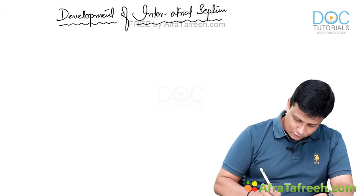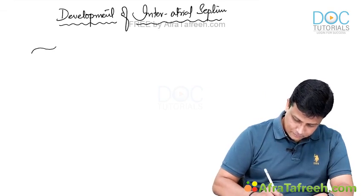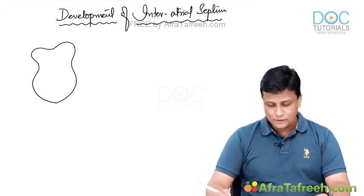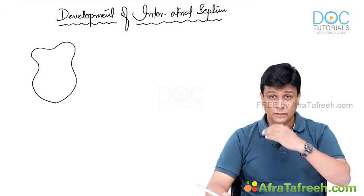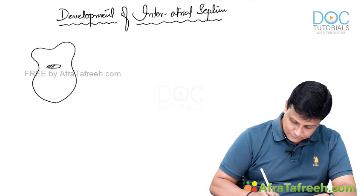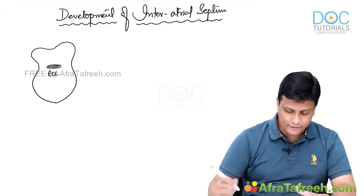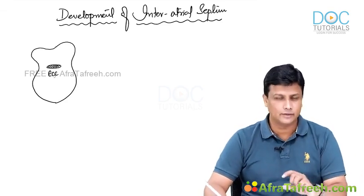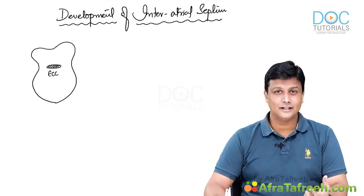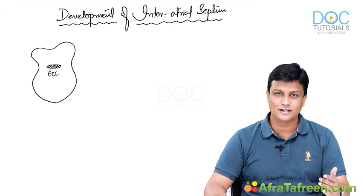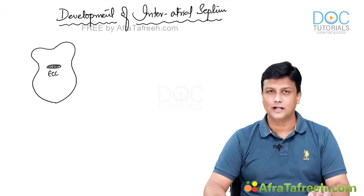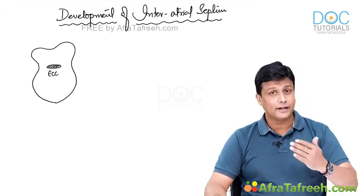For development of the inter-atrial septum, first try to understand from this diagram. In the developing heart, above you will have the atria and below there will be the ventricle. Between the atria and the ventricle there will be an endocardial cushion. Do not wonder where this endocardial cushion came from — in the very beginning of cardiovascular system embryology I told you that the endocardial cushion is also a derivative of splanchnopluric lateral plate mesoderm. It is between the atria above and the ventricle below.